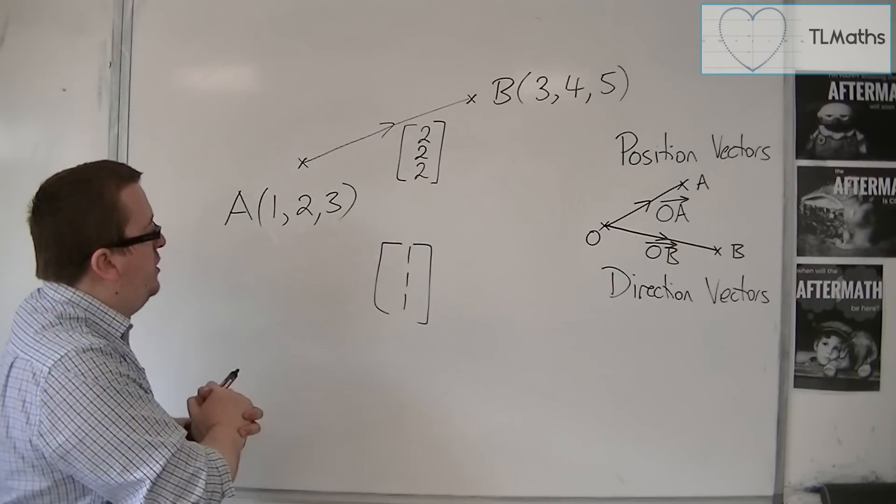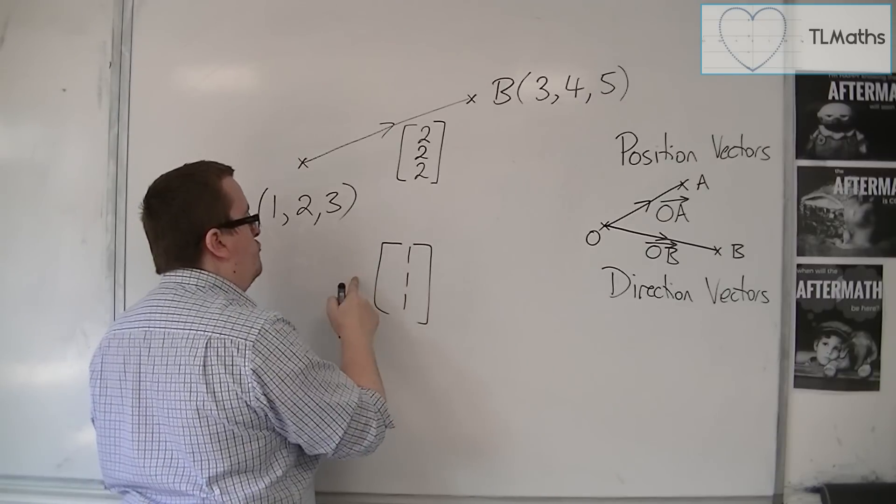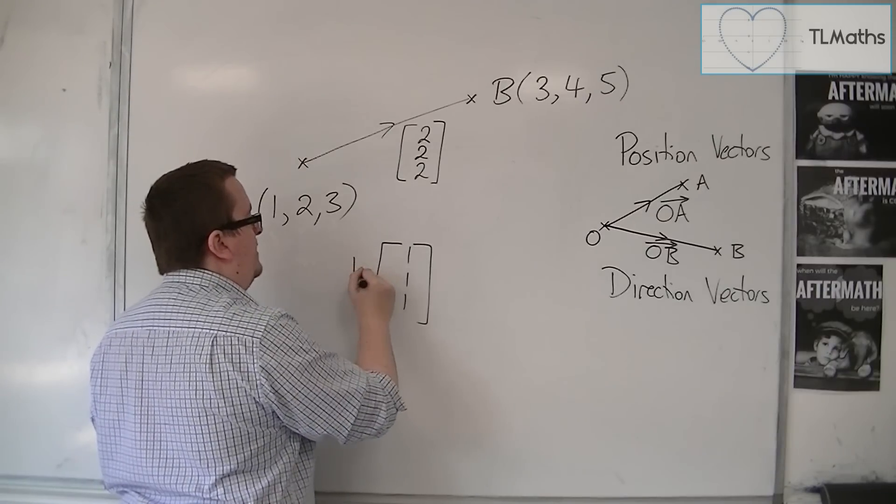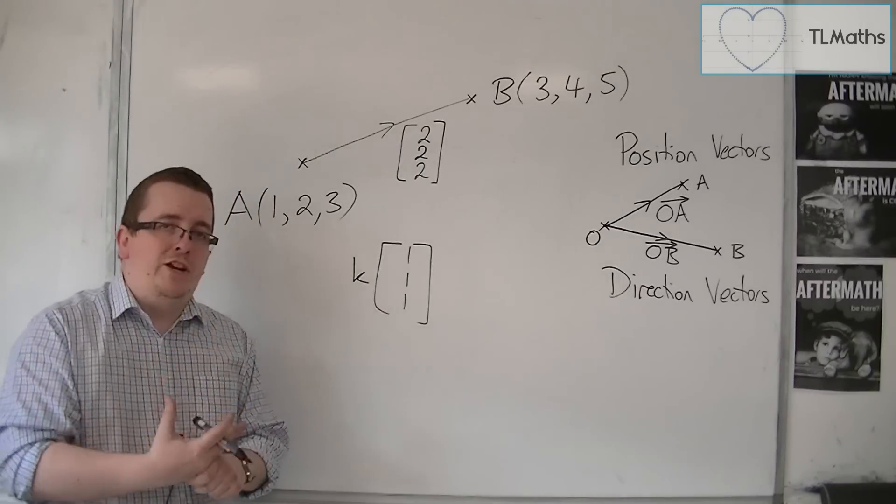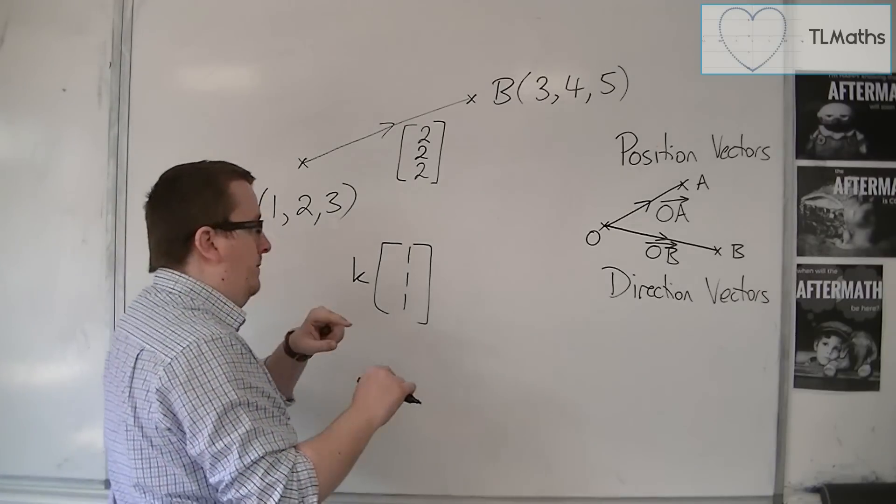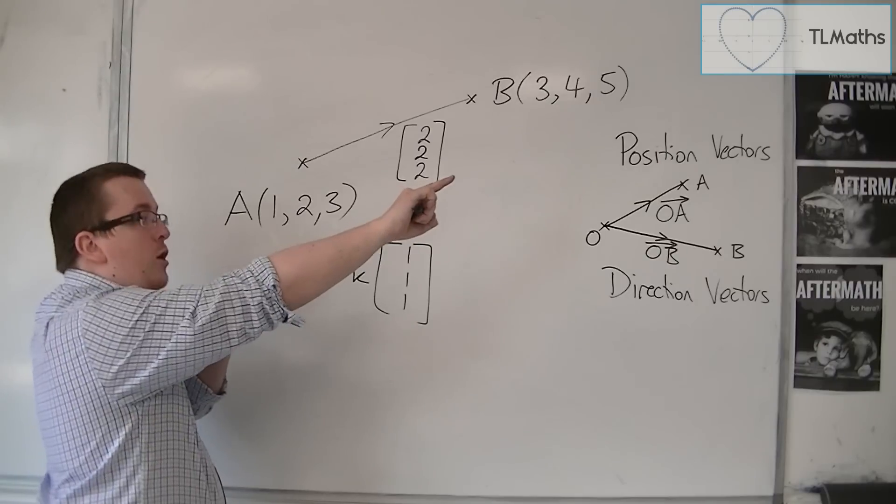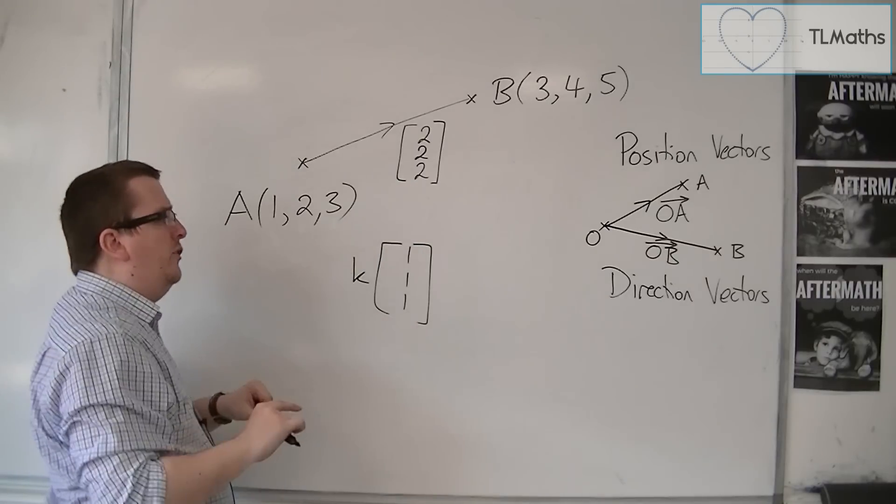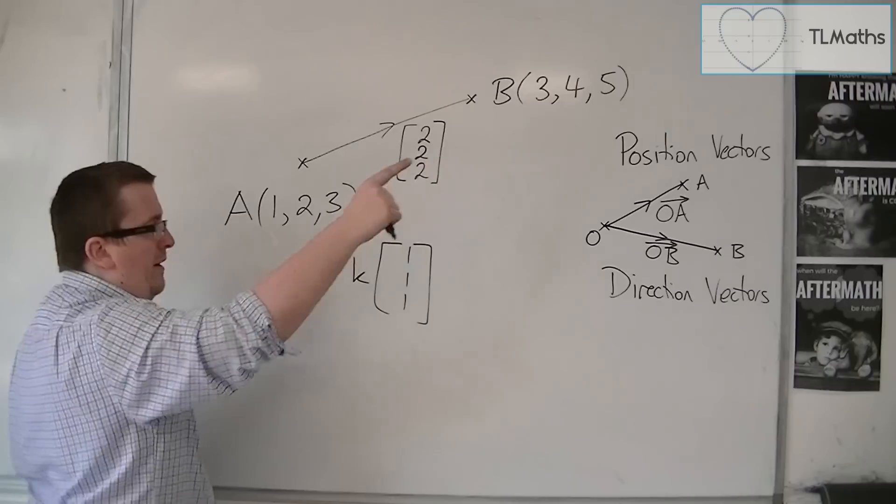So what you could do is you could put some multiple in front of this vector, and say that 1, 1, 1 is the direction vector that points me in the correct direction to where I need to go. So it tells me exactly the steps that I need to travel through.